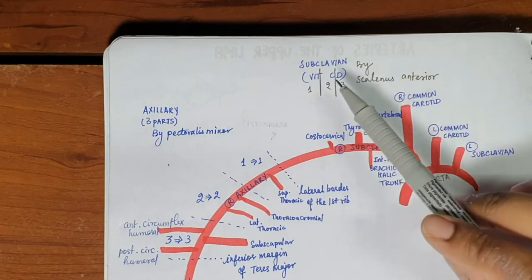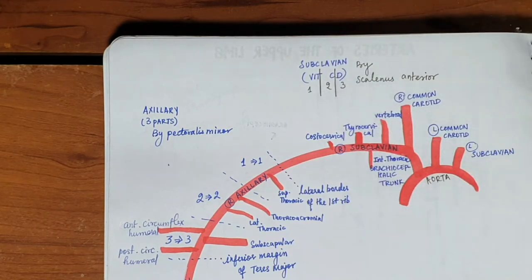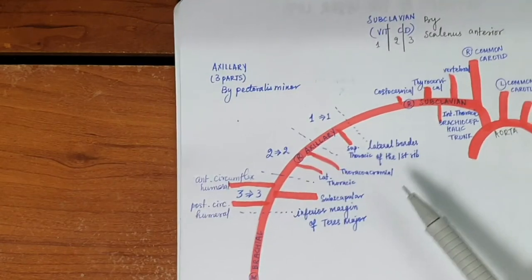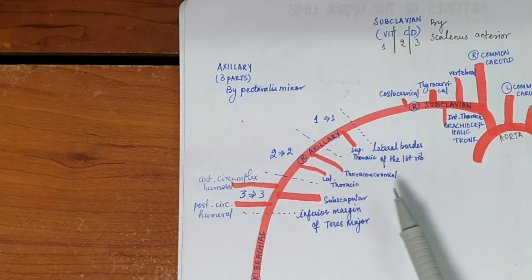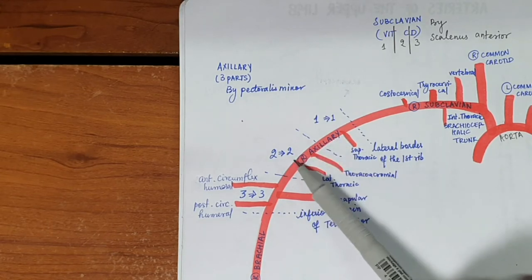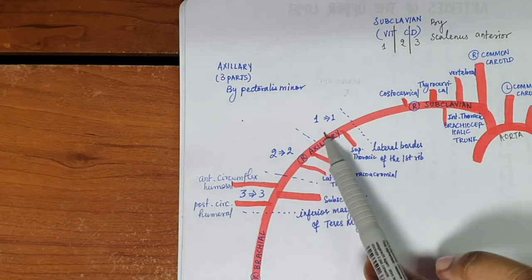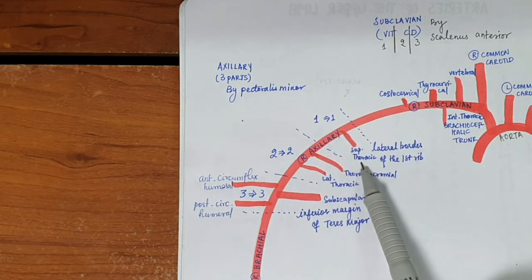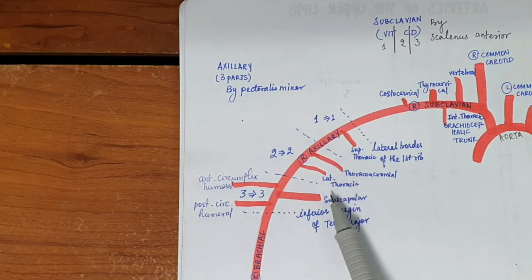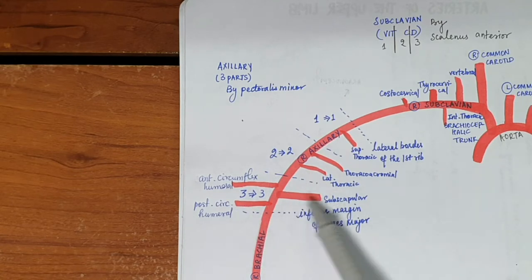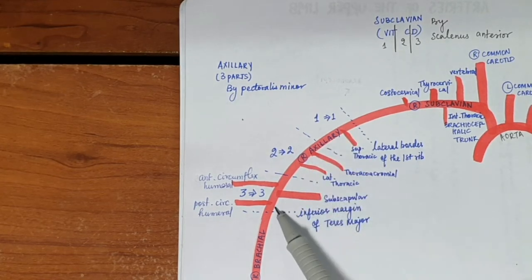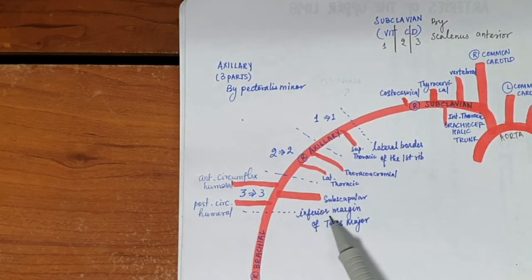This can be remembered as vitamin C and D. The axillary artery is divided into three parts by the pectoralis minor. The first part gives out one branch — the superior thoracic artery. The second gives rise to the thoracoacromial and lateral thoracic arteries. The third part gives rise to the anterior circumflex humeral, posterior circumflex humeral, and the subscapular artery. The axillary artery becomes the brachial artery after the inferior margin of teres major.